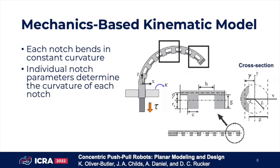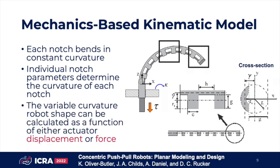The individual notch parameters — such as the notch width, cut depth, and spacing between notches — determine the curvature at each notch. Thus, by varying these parameters at each notch, we can create a variable curvature continuum robot. We have formulated our model such that the robot shape can be calculated as either a function of actuator displacement or force.